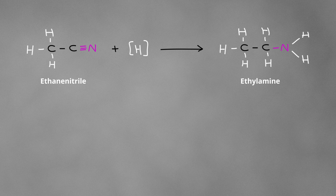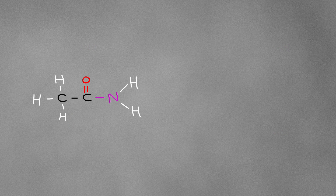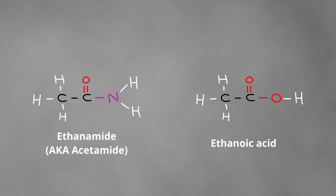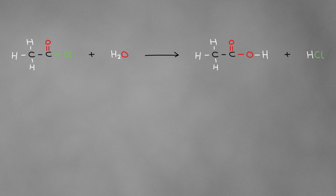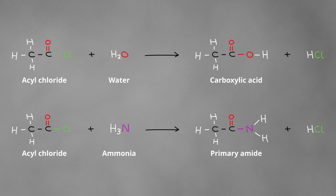Here's ethanenitrile being reduced to ethylamine, and here's ethanal being reduced to ethanol. Can you see how similar it is? We can do the same with primary and secondary amides. If we look at ethanamide, also known as acetamide, the oxygen-based compound it most closely resembles is ethanoic acid. Primary amides are just nitrogen-based carboxylic acids. And just like how you can make a carboxylic acid by reacting an acyl chloride with water, you can make a primary amide by reacting an acyl chloride with ammonia — which is the nitrogen analogue of water. It's the exact same reaction; there's just an oxygen version and a nitrogen version.